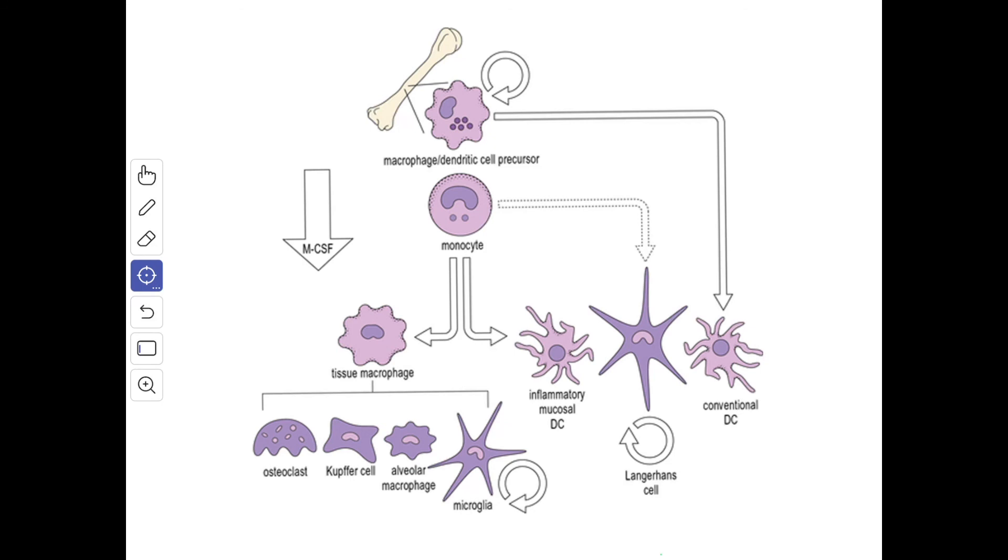When suitably stimulated, the mononuclear phagocytes secrete tumor necrosis factor TNF which is able to kill neoplastic cells. The macrophages influence the growth and differentiation of the tissue by producing several growth and differentiation factors.